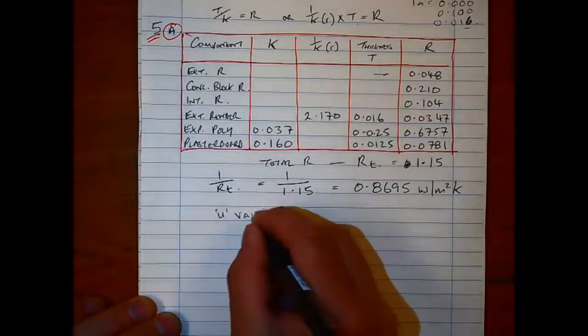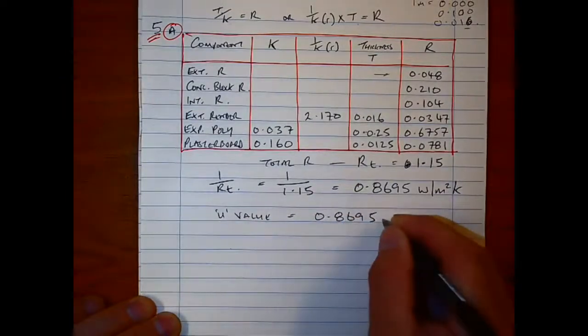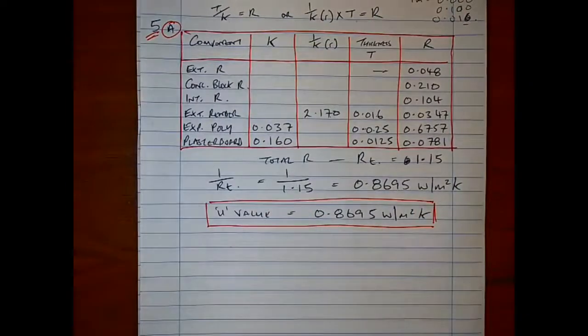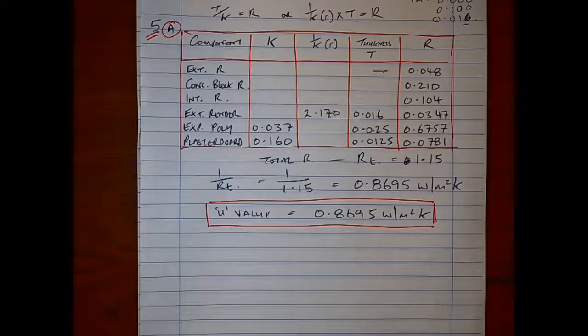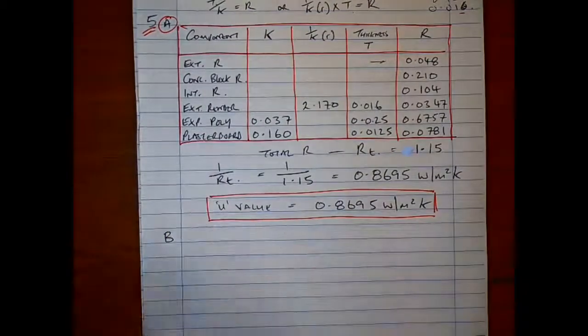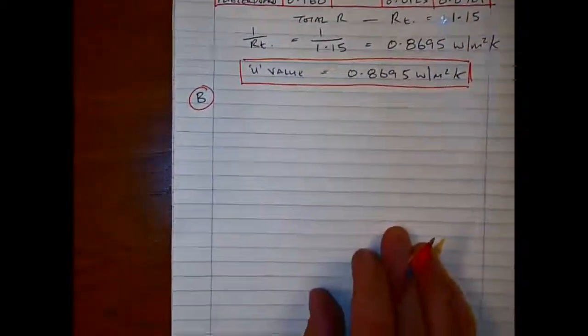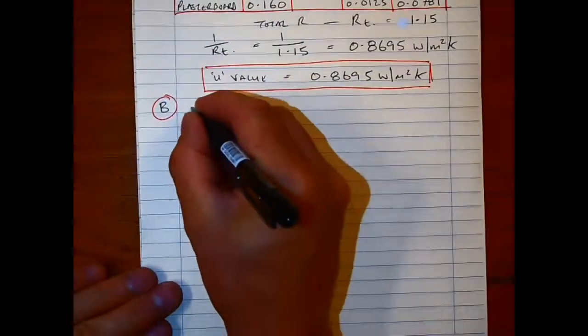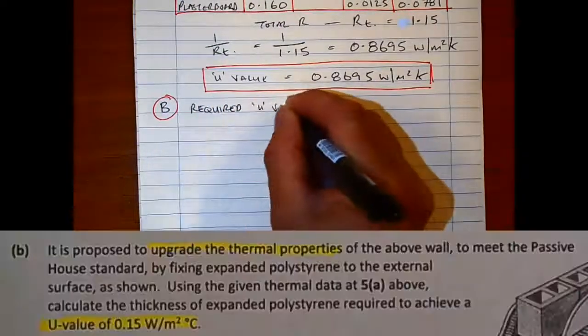That is the first part of the question, which normally accounts for nearly half of the marks of the full question. Just at the end, I like to highlight my answer as usual. So just to recap: you have two formulas—you're multiplying the resistivity by the thickness, or you're taking the thickness and dividing it by the conductivity to get your R, and add them all up.